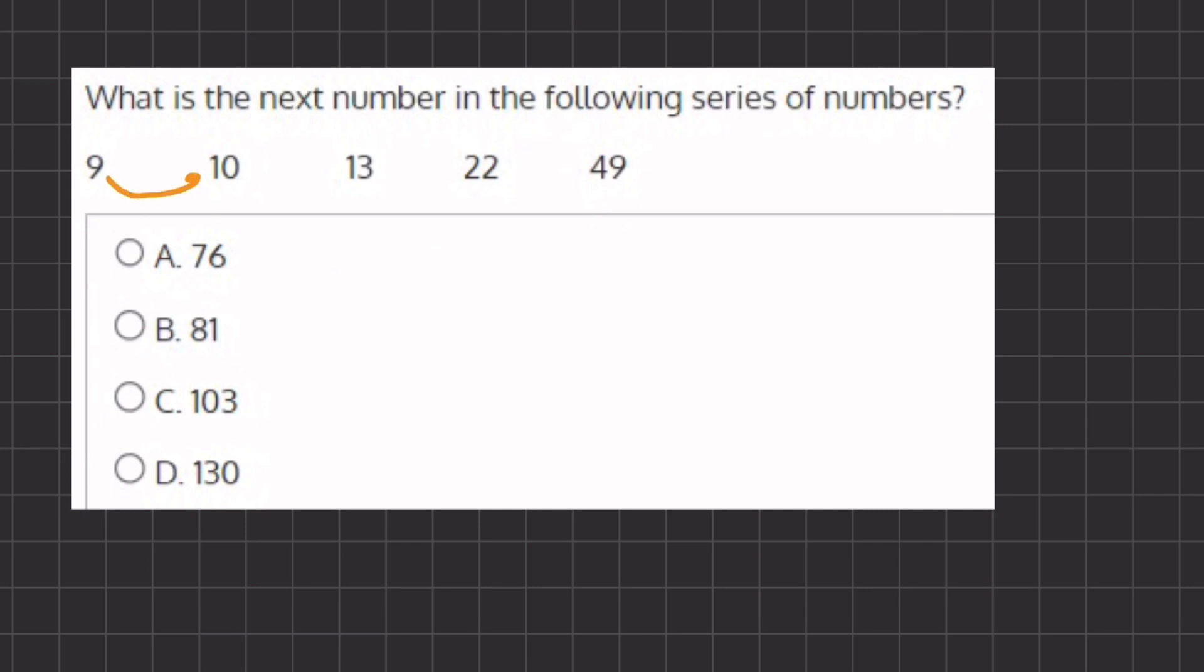So the shift between 9 and 10 seems like it's being added by 1. And if we transition from 10 to 13, it seems like we are adding 3.